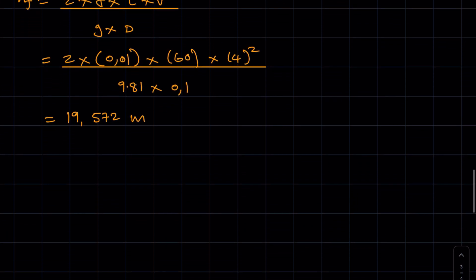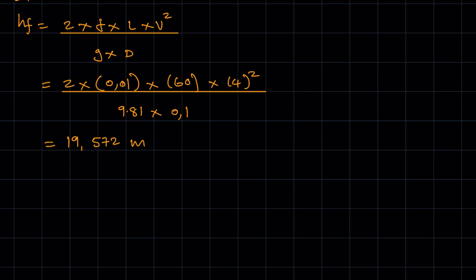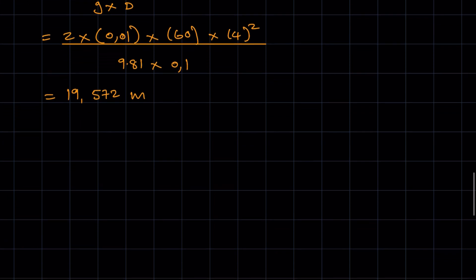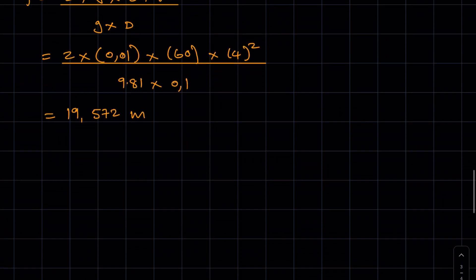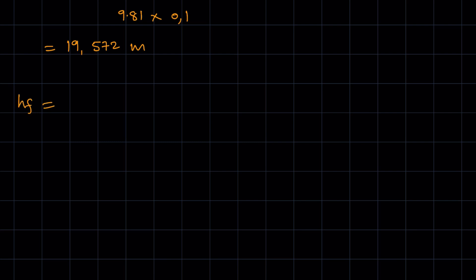In this case, because they are asking us to check the frictional head loss we just calculated, checking your answer using Chezy's equation essentially means we have to calculate the frictional head loss again, but now using Chezy's formula. As we know, in Chezy's formula the frictional head loss is equal to the hydraulic gradient times L.